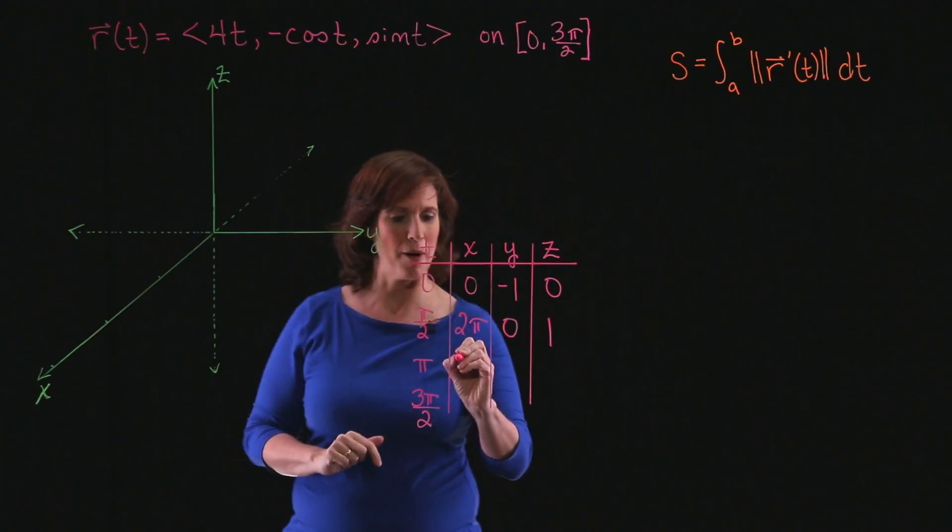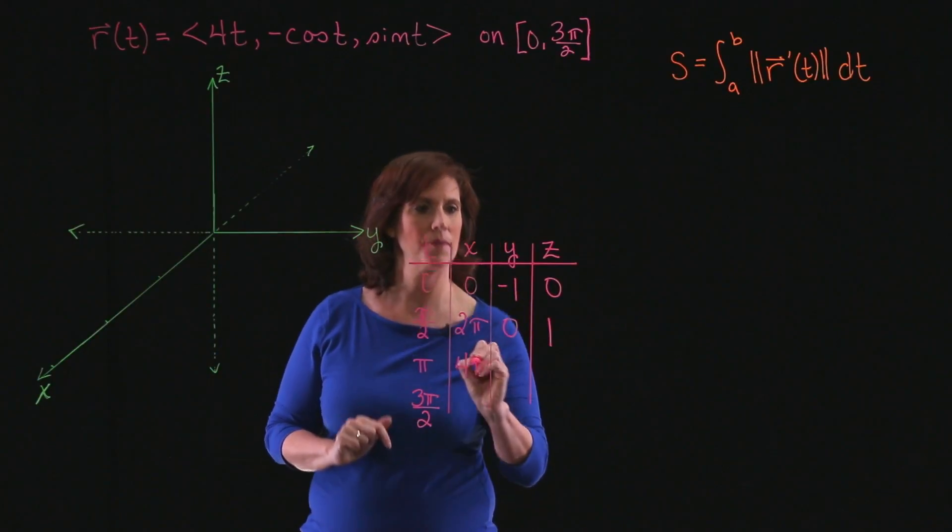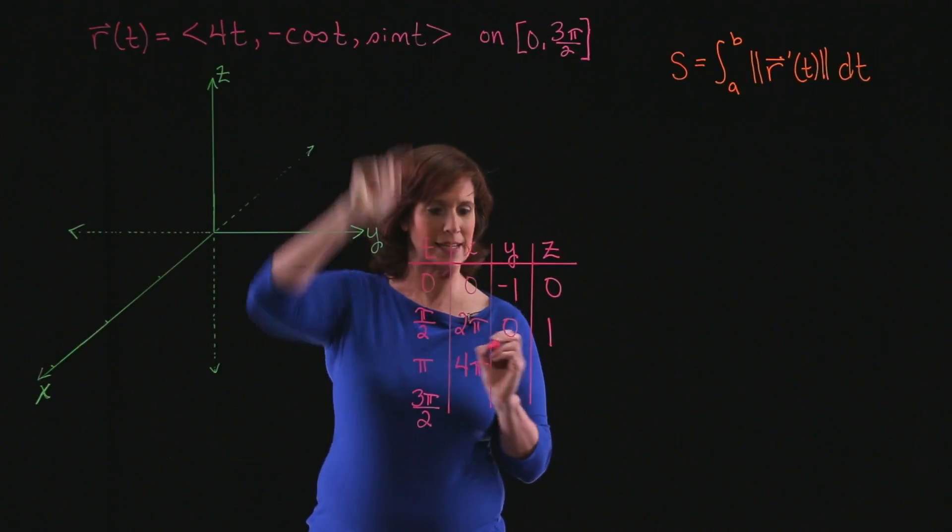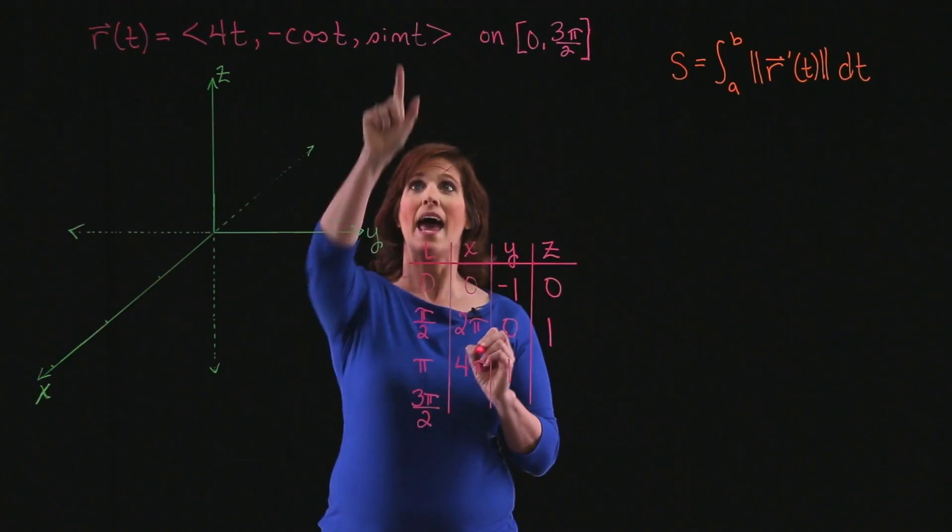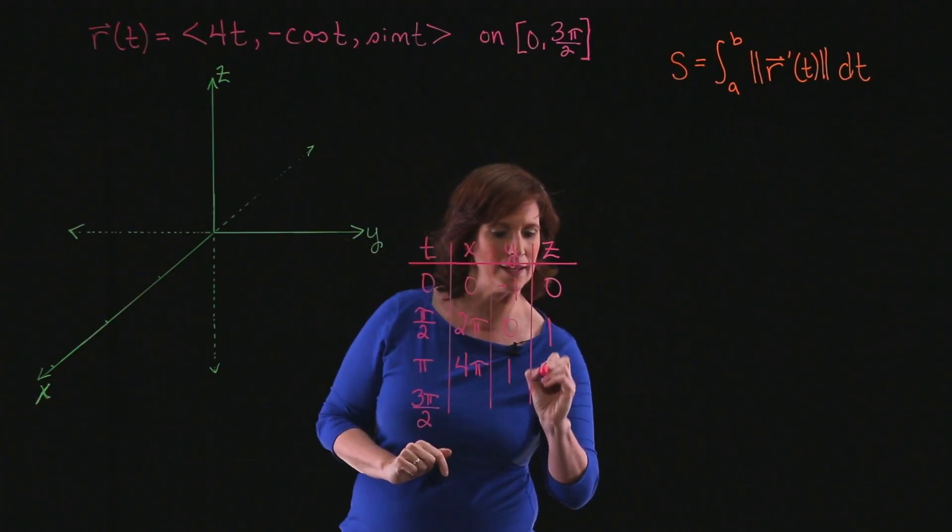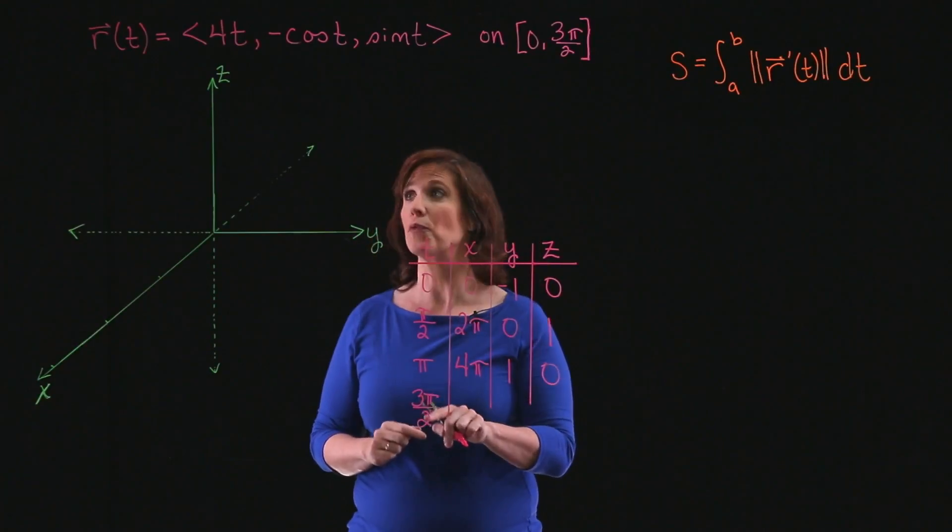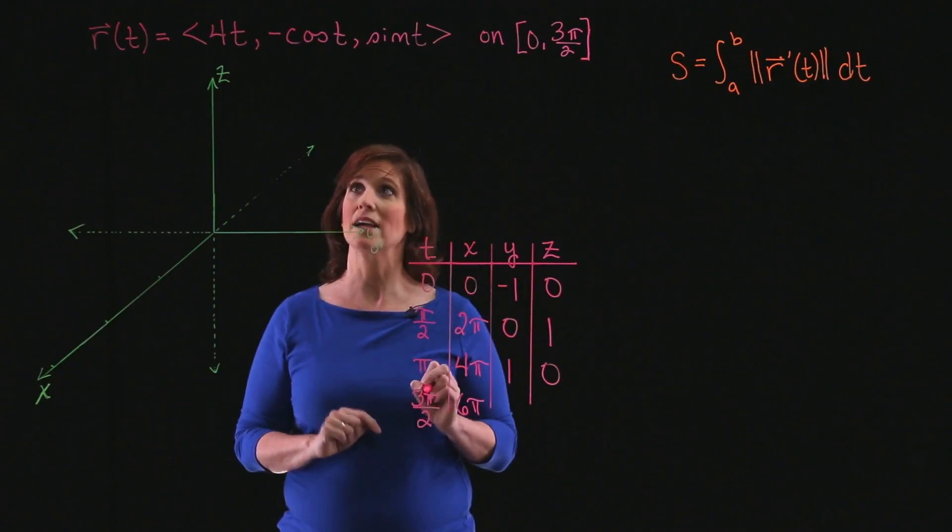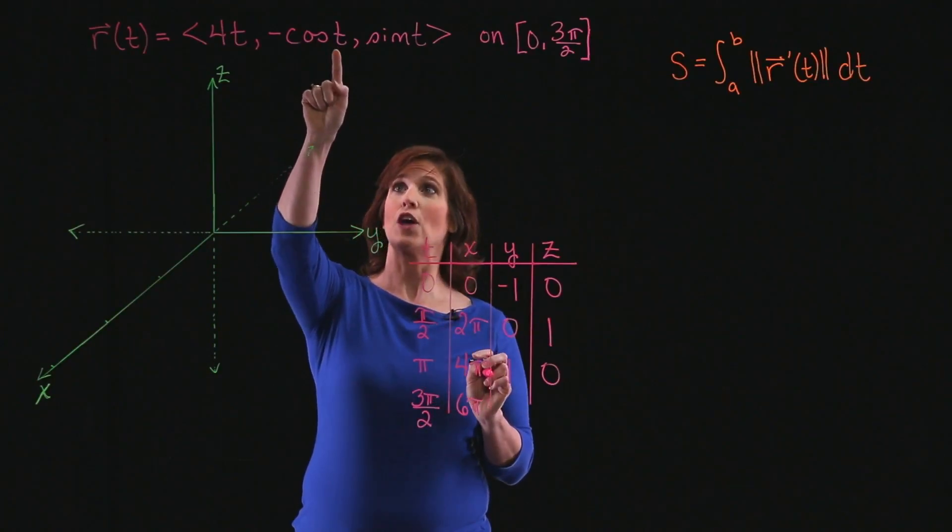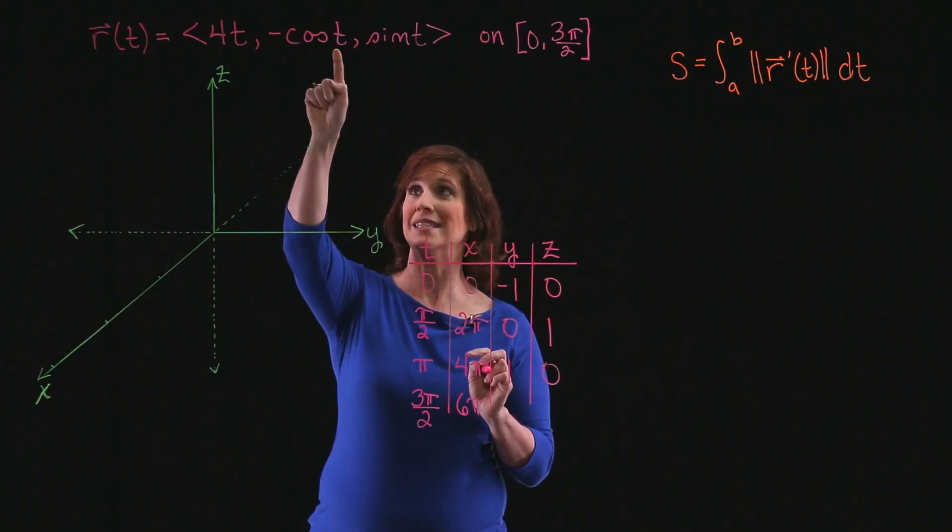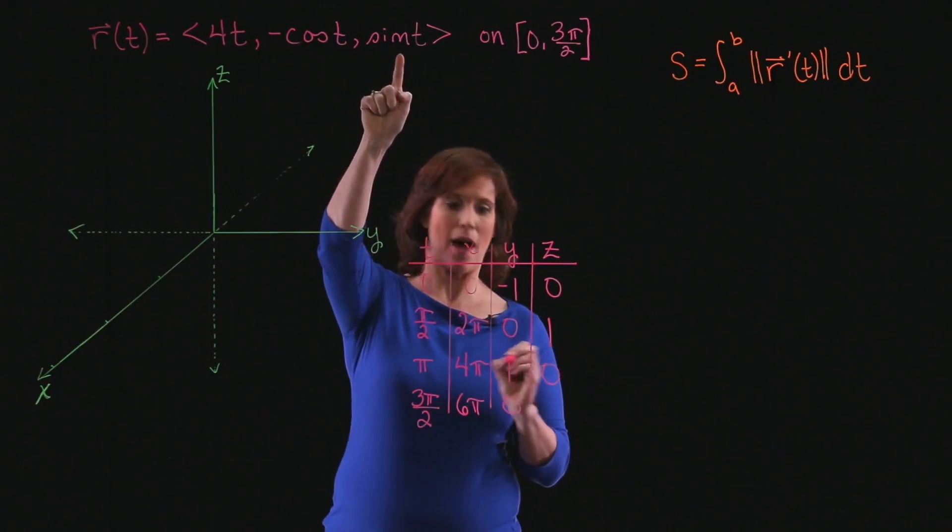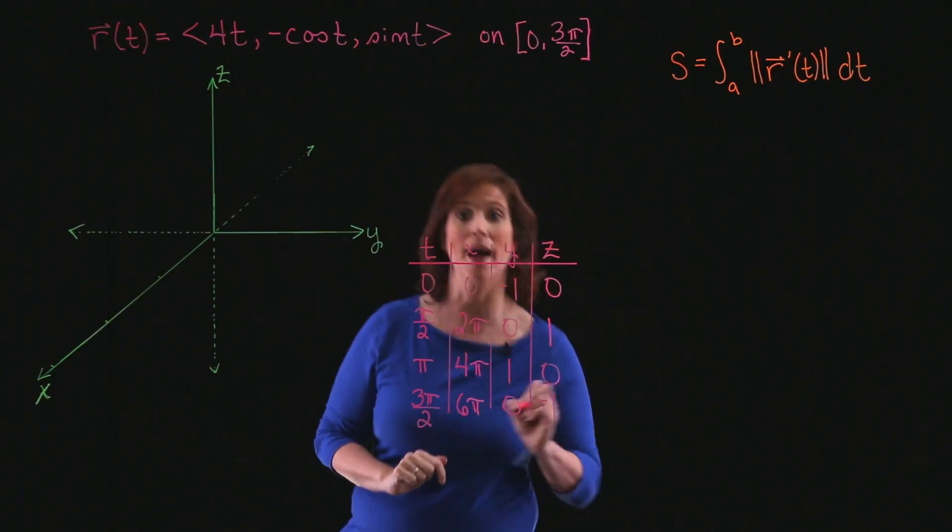Plugging in π, I'll have 4π. The cosine of π is -1, and minus a negative 1 is a positive 1, and the sine of π is 0. And finally, at 3π/2, I'm going to have 6π for my x coordinate. The cosine of 3π/2 is 0, and minus 0 is 0. And the sine of 3π/2 is -1.